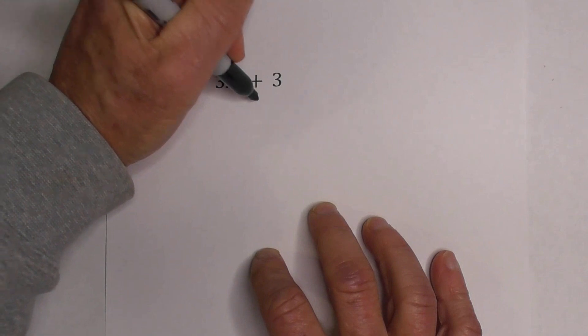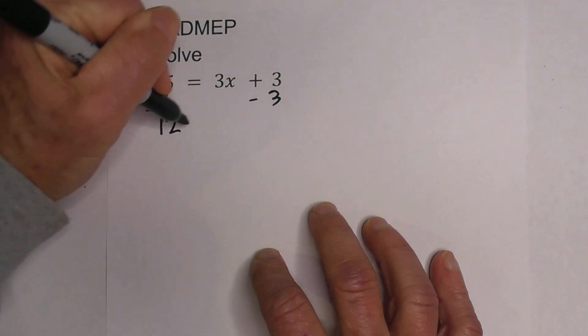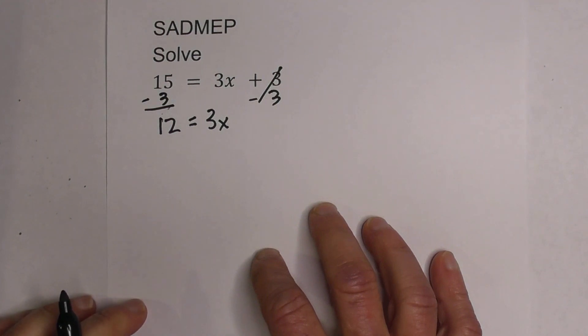So let's go ahead and subtract 3 from both sides. Okay, when we do this, this gives me 12 equals 3x, and these cancel.